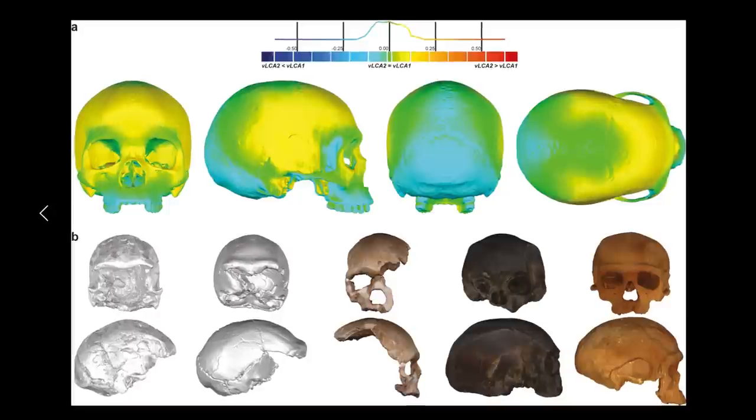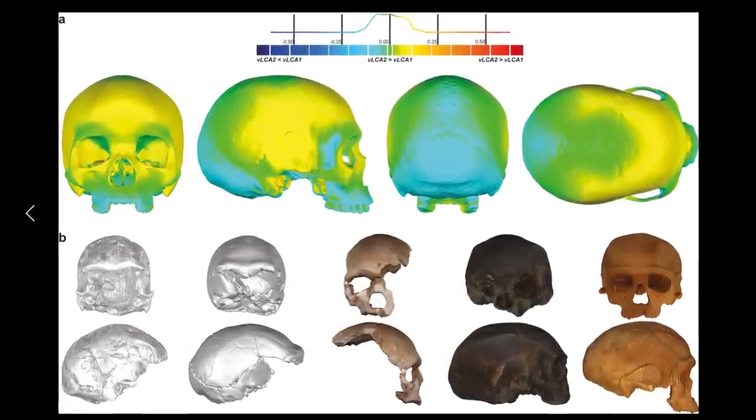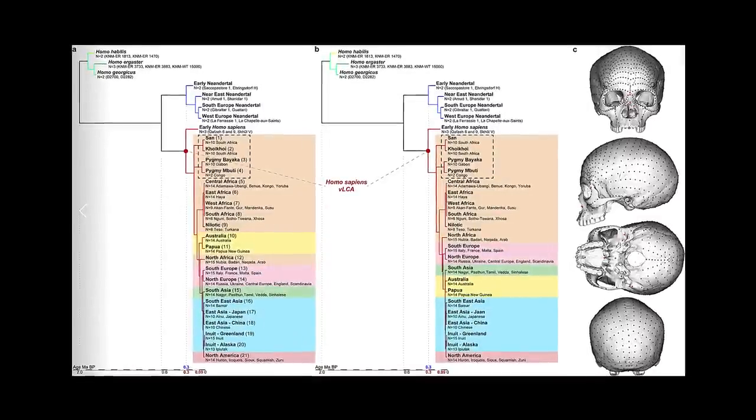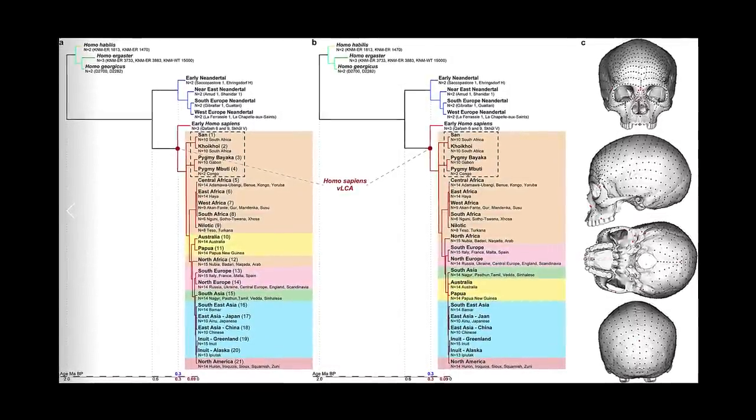In fact, the idea of a recent, localized origin within a discrete population has been buried. In its place is a much deeper origin story beginning at least 300,000 years ago, and perhaps as many as half a million years.